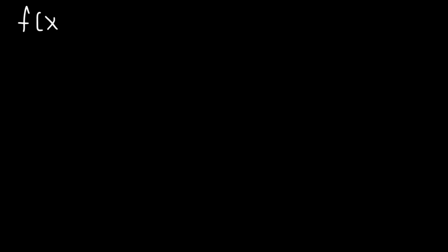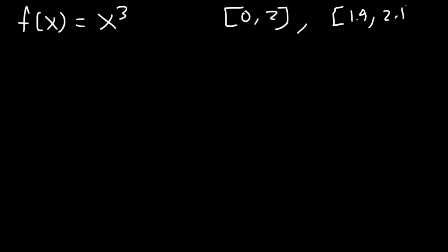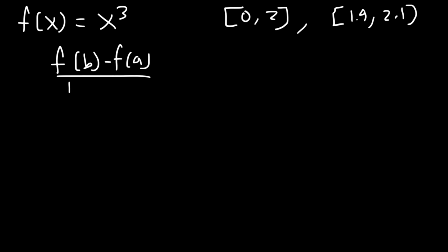Now what about the average rate of change? What is the average rate of change between the points when x is 0 and when x is 2, and also between 1.9 and 2.1? Notice what happens when you calculate it for these two different intervals. To find the average rate of change, it's simply f of b minus f of a, divided by b minus a.